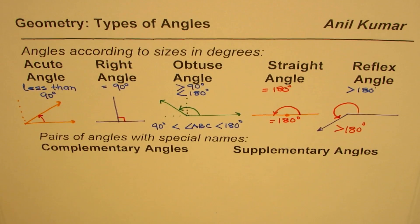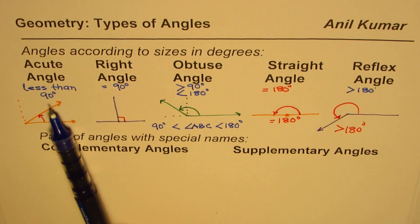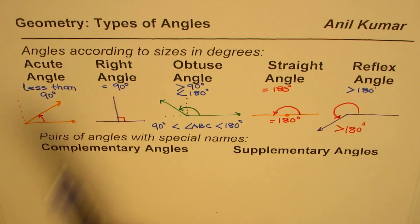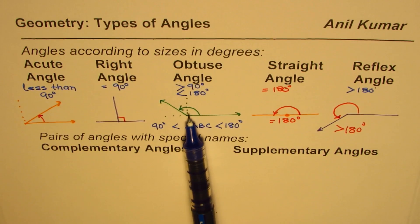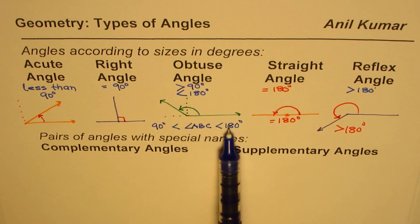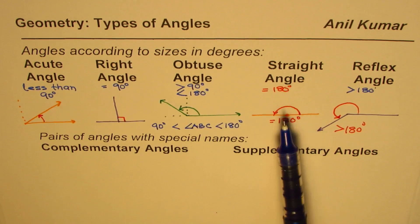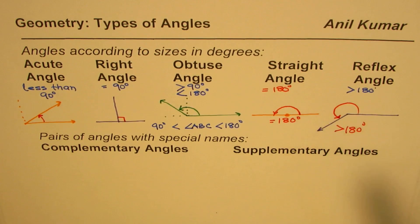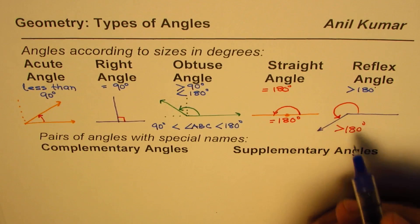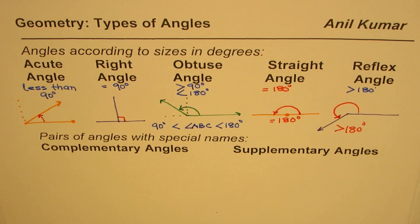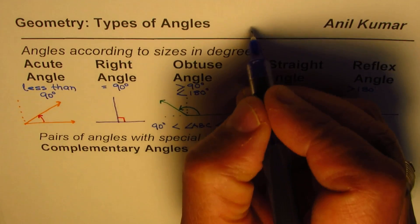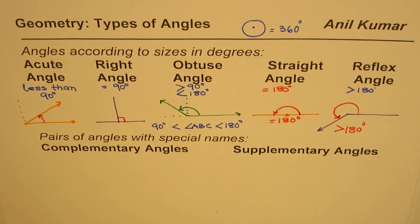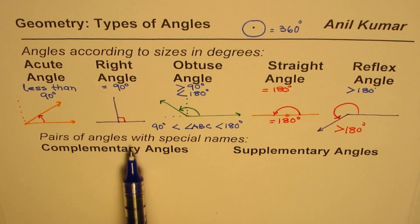To summarize: if the measurement is less than 90 degrees it is called an acute angle; if it is equal to 90 degrees it's a right angle; obtuse angle is greater than 90 but less than 180 degrees; straight angle is equal to 180 degrees; reflex angle is greater than 180 degrees and less than 360 degrees. The total angle of a full circle is 360 degrees.